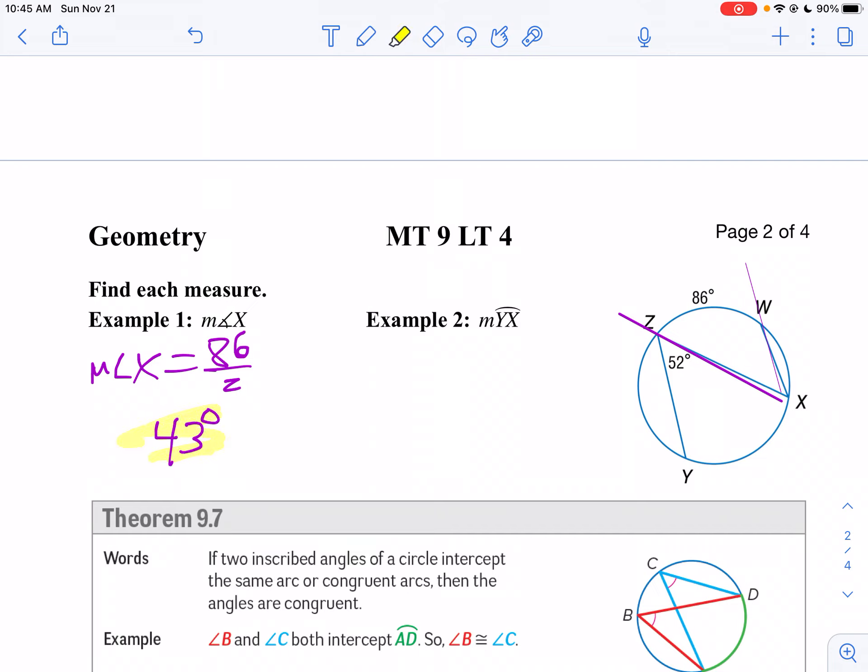And then if we take a look at example 2, we want to find the measure of arc yx. Well what angle cuts off yx? So here's y. I'm going to trace y and that goes back to z. Here's x. I trace that, it goes back. So in other words, 52 is half of yx.